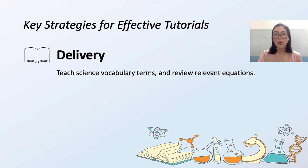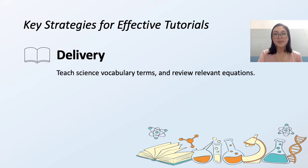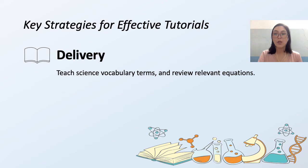The student will need to know what a word means in order to understand the lessons. Another important strategy is reviewing relevant equations. Some branches of science, such as chemistry and physics, rely heavily on certain equations, and learners won't be successful until they master those equations. Make sure you cover those equations until the learners know them by heart.